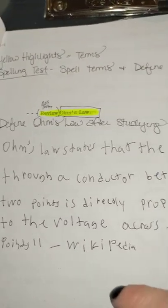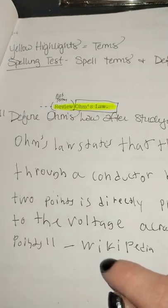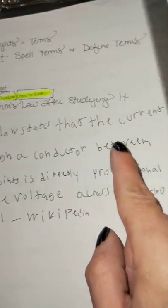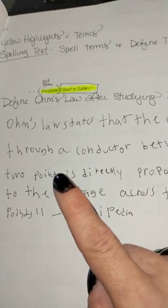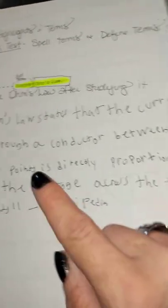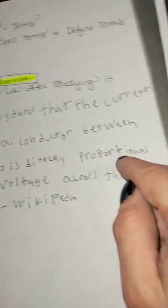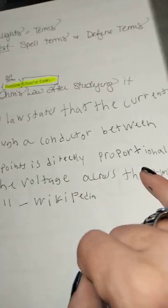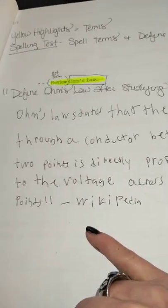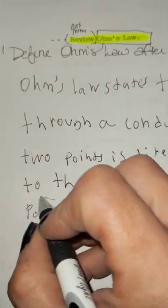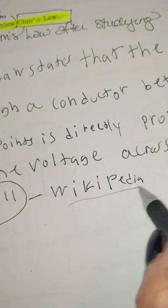You will test terms, spelling test terms, define terms. After studying it, Ohm's law states that the current through a conductor between two points is directly proportional to the voltage, according to Wikipedia.